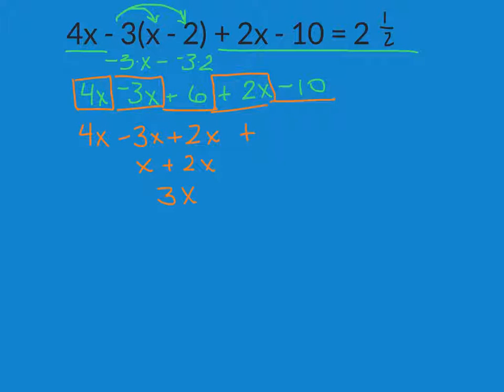Over here I've got plus 6, minus 10. So that's positive 6, take away 10 is minus 4. Bring down this, equals 2 and 1 half.